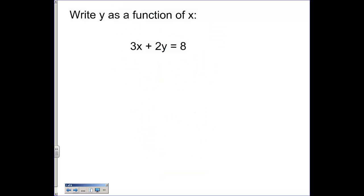If you see something that says write y as a function of x or write one thing as a function of another, what that's really saying is solve for y. So get y by itself. Well, anything that doesn't have y, we need to get out of there first. So I'm going to minus 3x on both sides. So I have 2y is equal to 8 minus 3x.